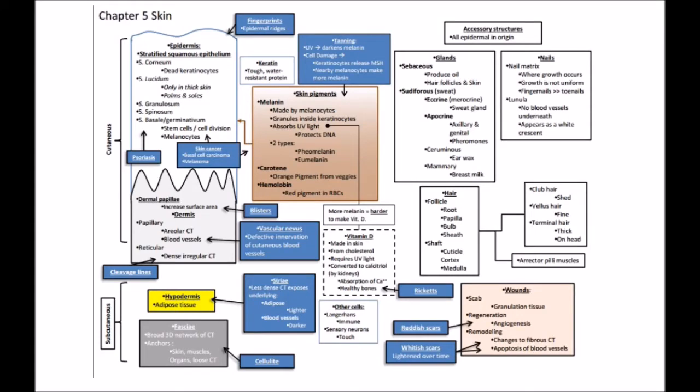Chapter 5 Review. In the skin, we found two basic layers, each of which contained specific types of tissue.